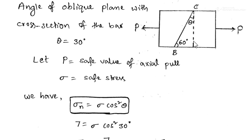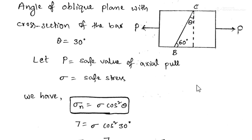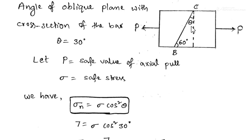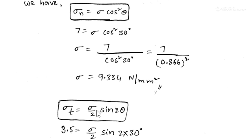From the construction: the oblique plane, a dotted line, and the bar form a triangle. The total angle in a triangle is 180°. One angle is 90° and the given angle is 60°, so the remaining angle theta is 30°. We have assumed P is the safe axial pull and sigma is the safe stress. Now we write the equations for normal stress and shear stress on oblique plane BC.